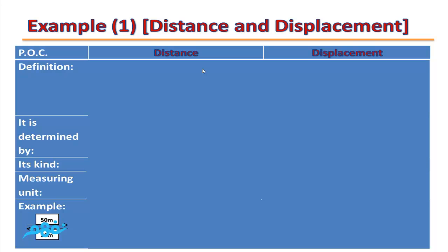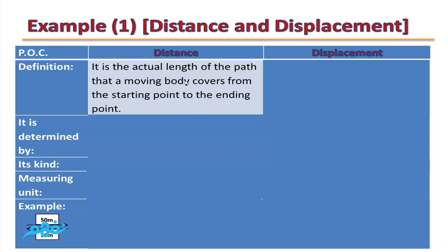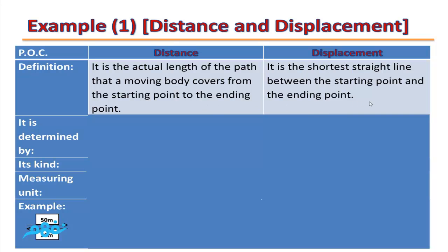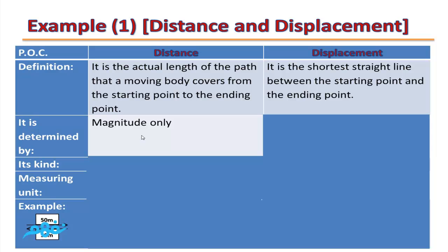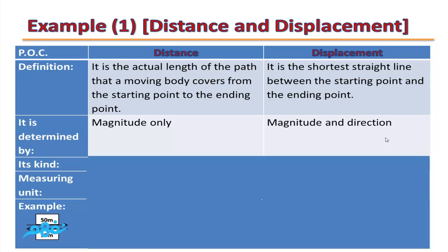Let's compare Distance — as an example of a scalar physical quantity — and Displacement — as an example of a vector physical quantity. Distance is the actual length of the path that a moving body covers from the starting point to the ending point. Displacement is the shortest straight line between the starting point and the ending point. To determine distance, we need to know its magnitude only, but to determine displacement, we need to know its magnitude and its direction.